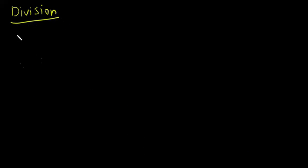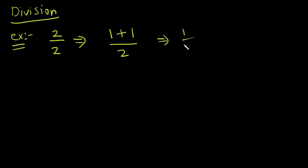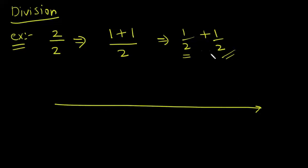Now the last operation is division. Let's take the example 2 divided by 2. You can write this as (1 plus 1) divided by 2, or 1/2 plus 1/2. You can easily convert this division operation into an addition operation. On the number line, you are at 1/2, and if you add another 1/2, you reach 1. So 2 divided by 2 equals 1.